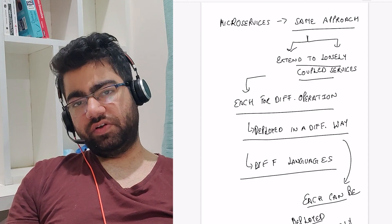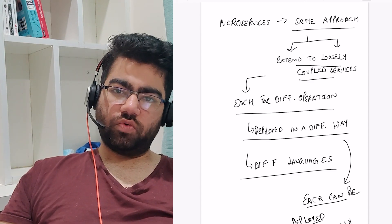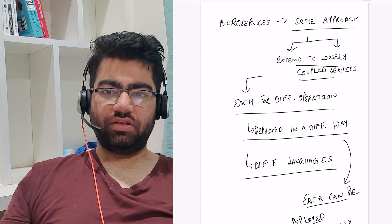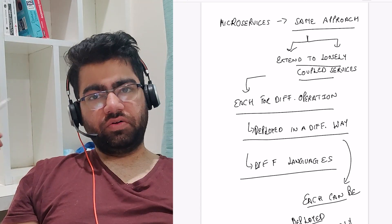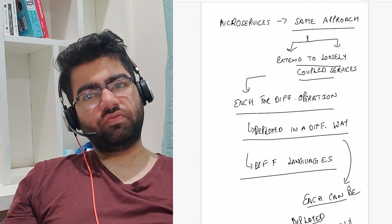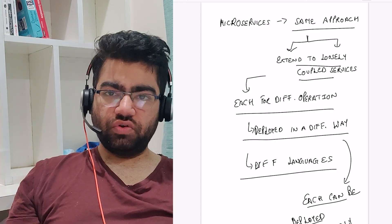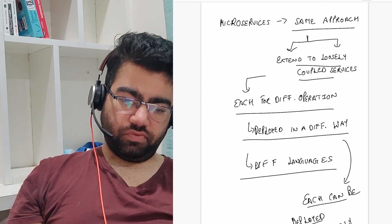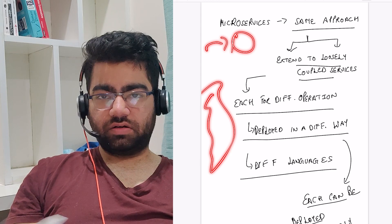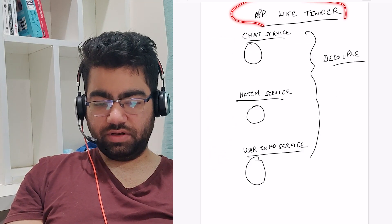Each service can have its own language — you can write one service in Java, one in Go, maybe one in C++, or whatever language you want. You can deploy all of them in different ways; you don't have to club them together and make deployment happen on the same day. Suppose you've only made a change in the payment service — you simply deploy just that service, and the other services keep functioning as they were.